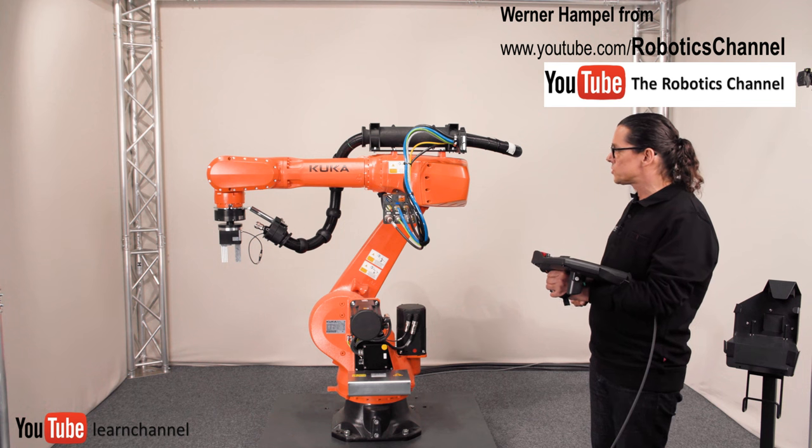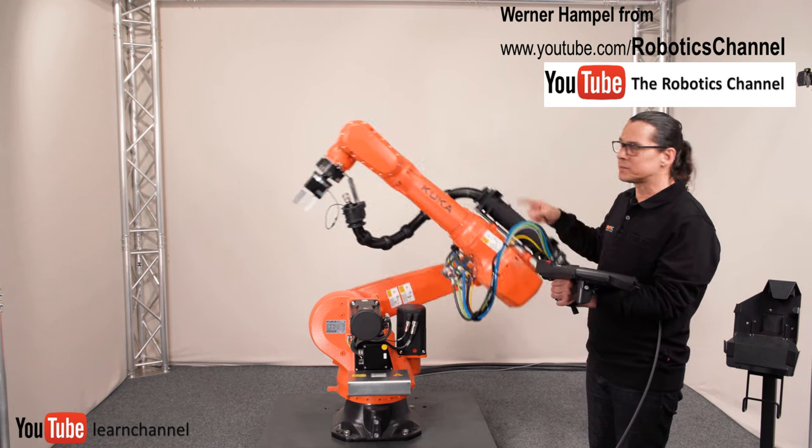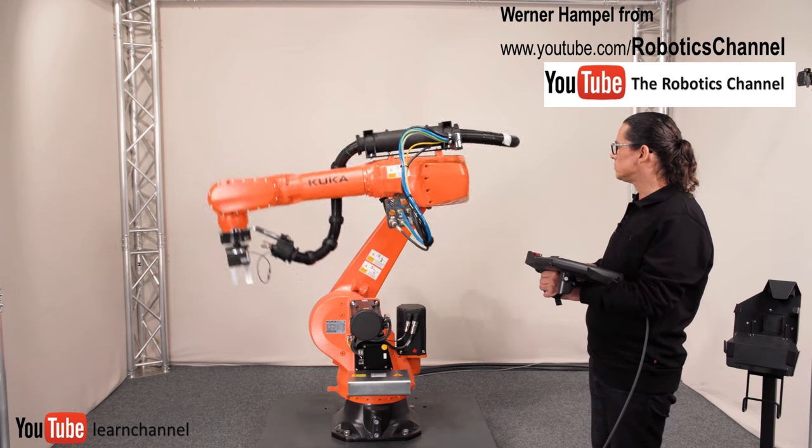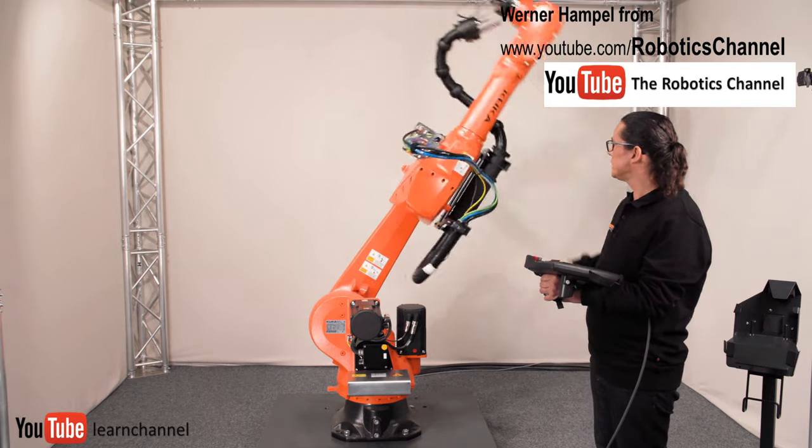Now we have axis 2, which also moves axis 3, 4 and 5 and 6. This is axis 3. Can turn over in this kinematic.